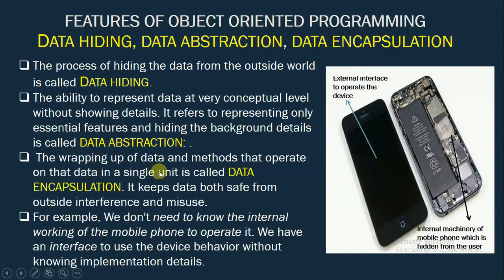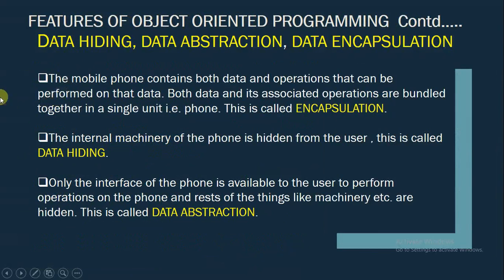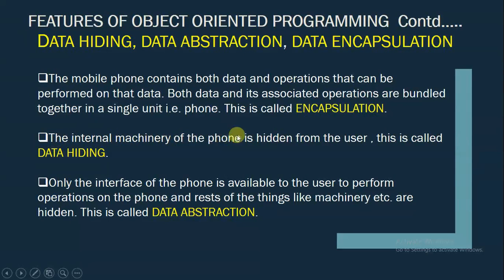Let us understand all these three terms using an example. You might be familiar with the mobile phone. To operate a mobile phone, we don't need to know the internal working of the phone. We have an interface to use the device behavior without knowing the implementation details. The mobile phone contains data and operations that can be performed on that data. Both data and its associated operations are bundled together into a single unit — that is, the phone — and this is nothing but encapsulation. The internal machinery of the phone is hidden from the user — you cannot see the internal machinery of the phone — and this is called data hiding.